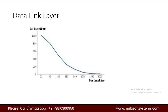Now moving to the data link layer. I want to explain how the bit rate is influenced when the CAN bus length increases. If you see this graph, if the bus length is less, the data rate will be higher. The more the CAN bus length, the less the allowed bit rate. So as we increase bus length, the bit rate decreases.